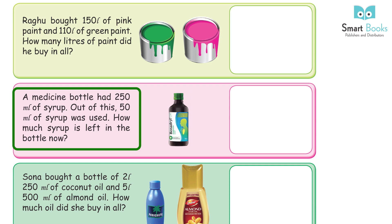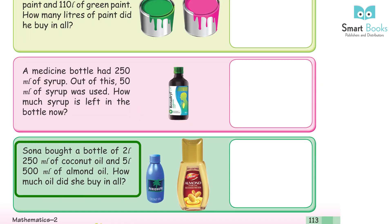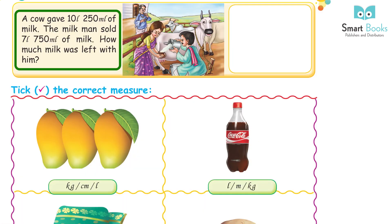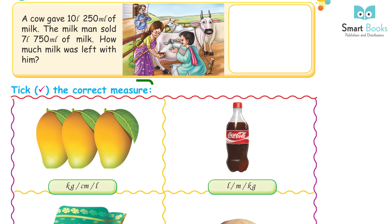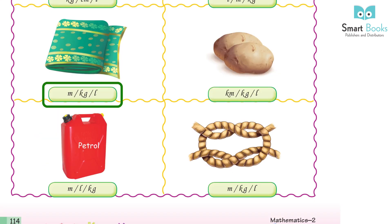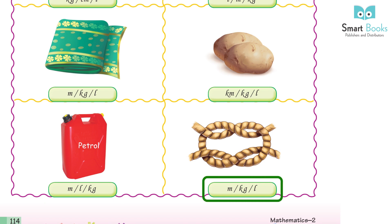A petrol tanker had 500 liters; 110 L 250 ml was lost due to leakage. How much petrol is left? Answer: 389 L 750 ml. Ragu bought 150 L of pink paint and 110 L of green paint. Total paint? Answer: 260 liters. A medicine bottle had 250 ml syrup; 50 ml was used. How much is left? Answer: 200 ml. Sona bought 2 L 250 ml of coconut oil and 5 L 500 ml of almond oil. Total? Answer: 7 L 750 ml.